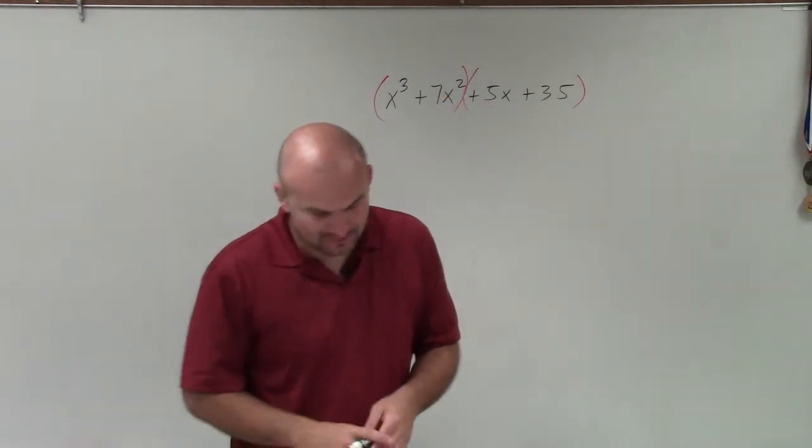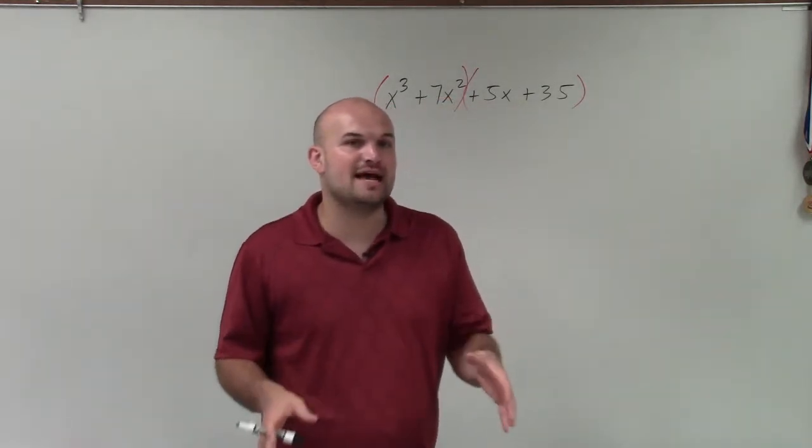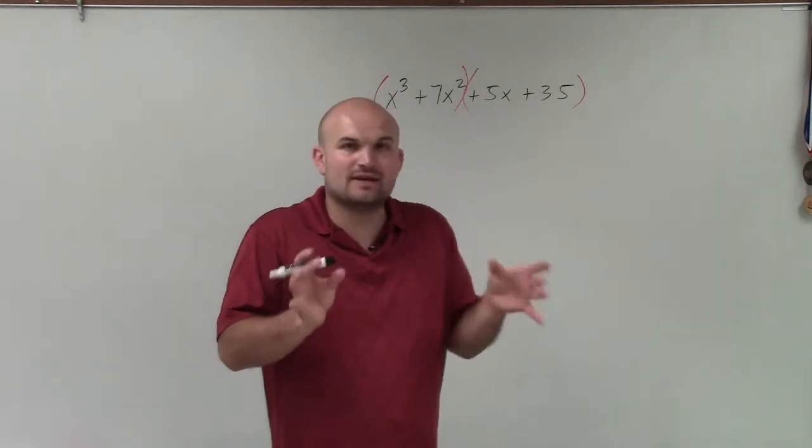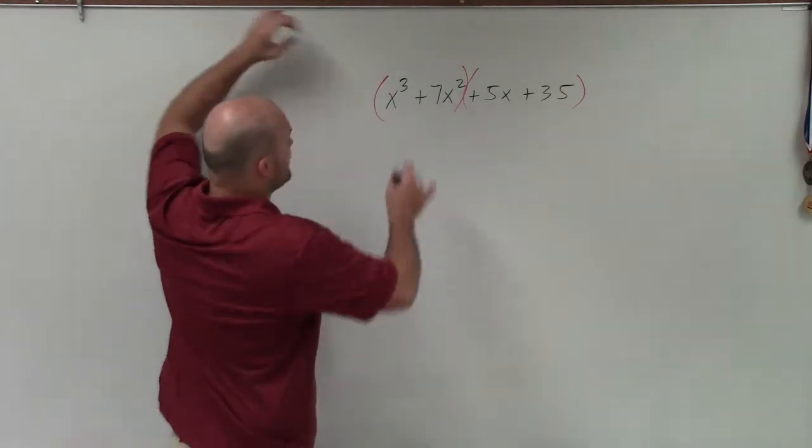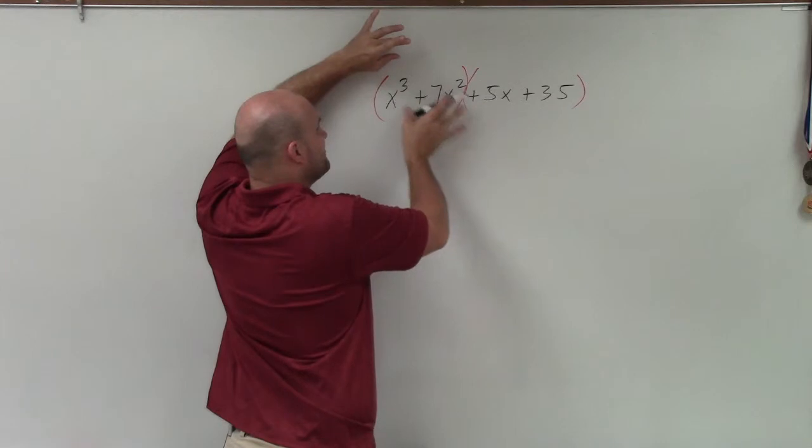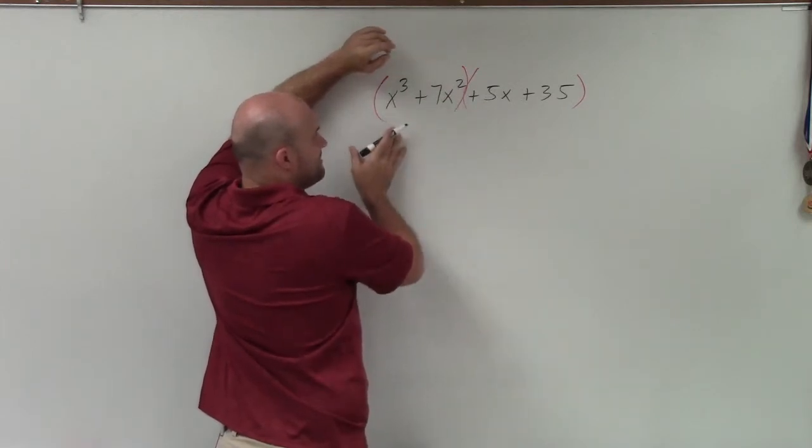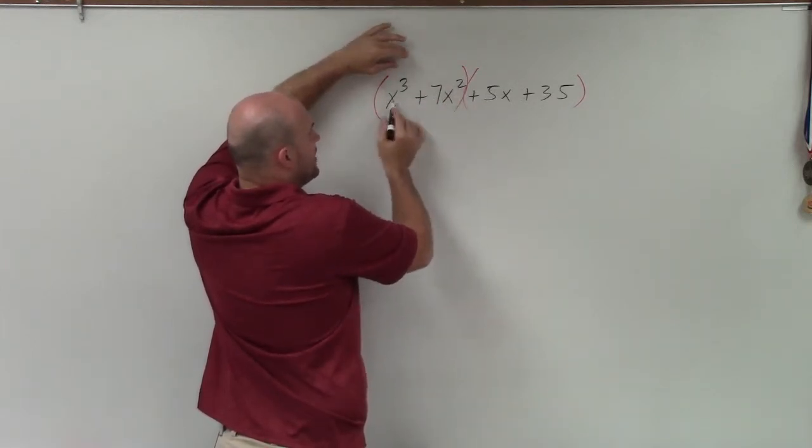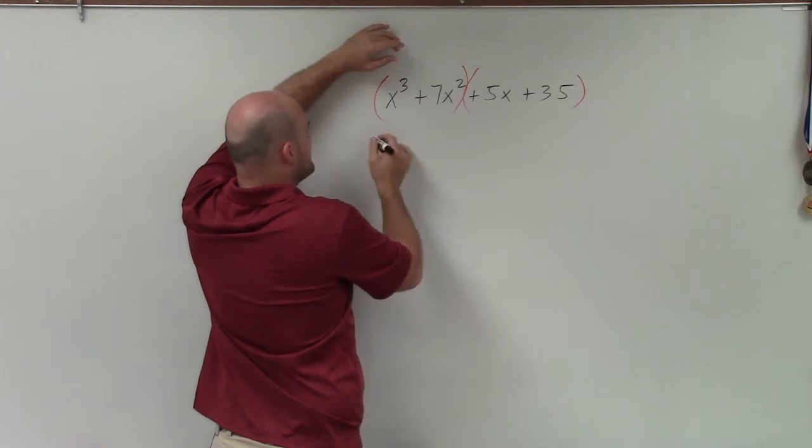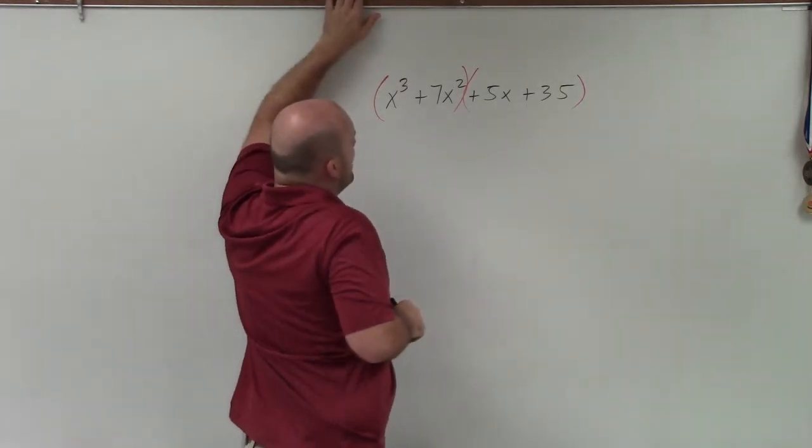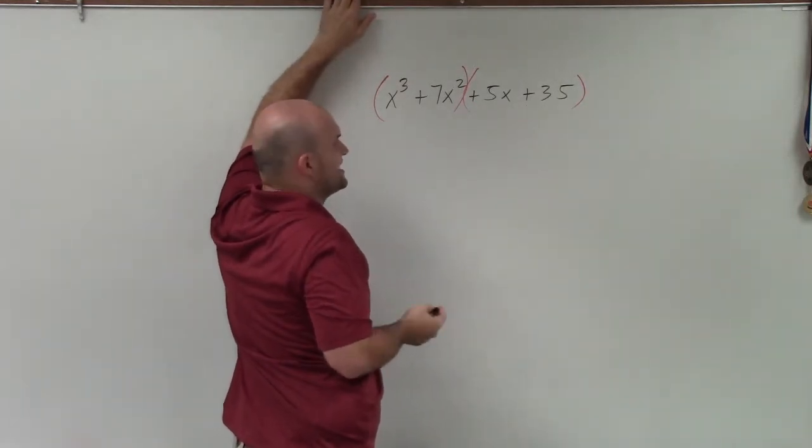Now what I do is I'm going to factor out the GCF of each one of these groupings. So I group these first two and I say, all right, if I could factor out the GCF of these two, what would it be? Well, the GCF of x cubed and 7x squared is going to be just an x squared.